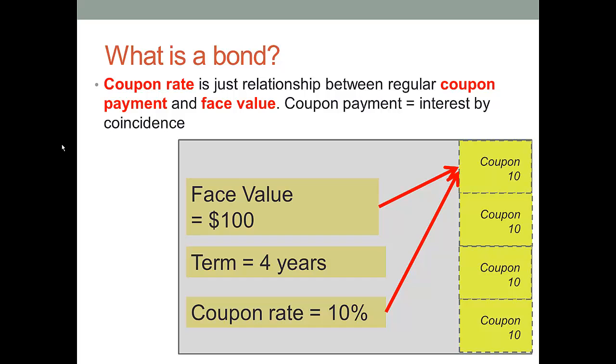Firstly, let's talk about the coupon rate. Then let's talk about why it's incorrect to call that an interest rate. The coupon rate tells you the relationship between the face value and the coupon payments regularly made. So this bond with a face value of $100, a term of four years, and a coupon rate of 10%, is actually promising the following cash flows. Each coupon payment is going to be 10% of the face value. So after one year, the person who's lent me the money is going to get $10. At the end of the second year, they're going to get another $10. At the end of the third year, they're going to get another $10. And at the end of the fourth year, they're going to get the last $10.